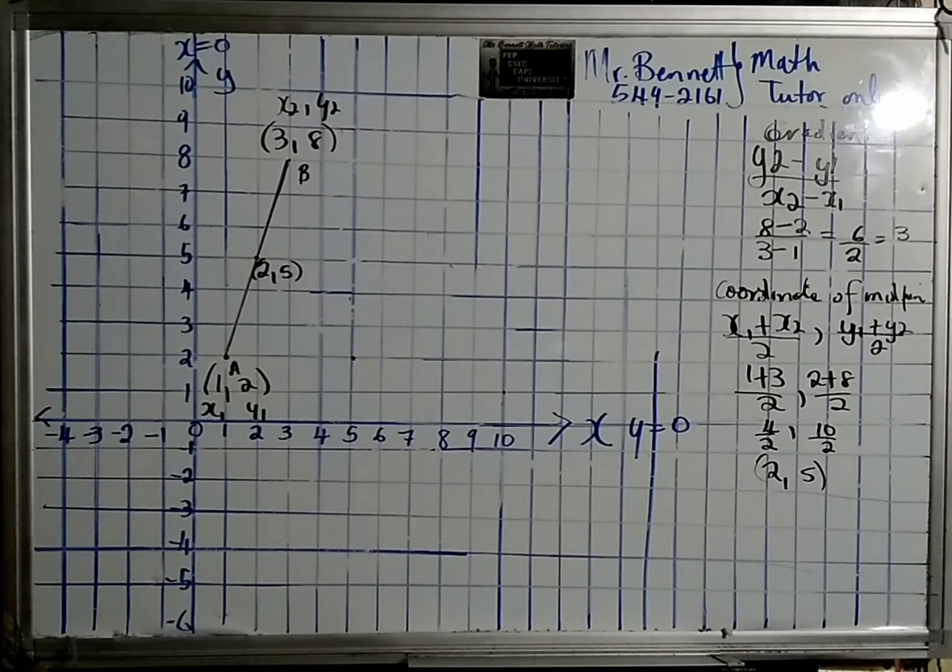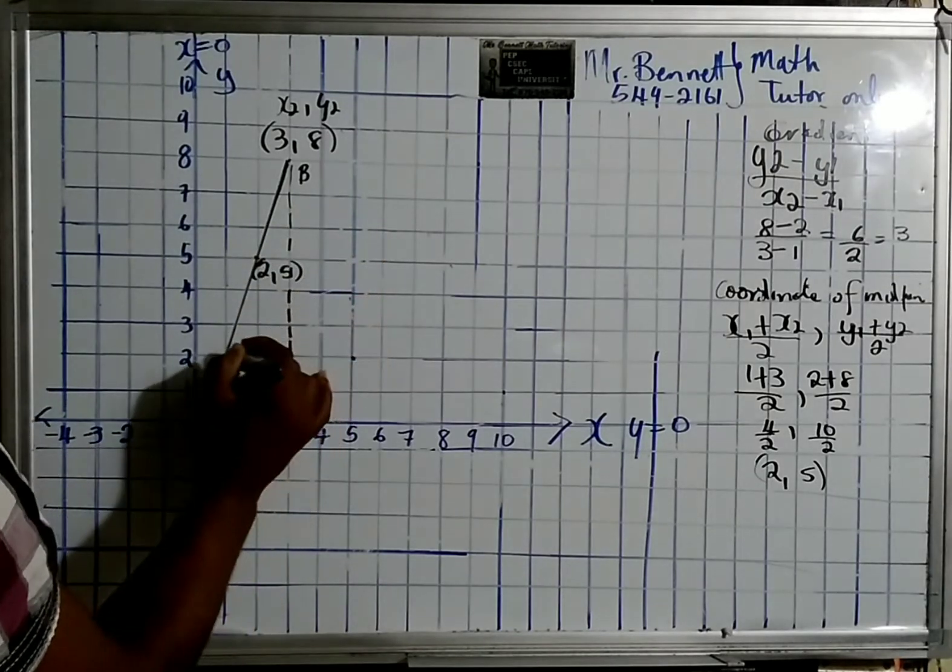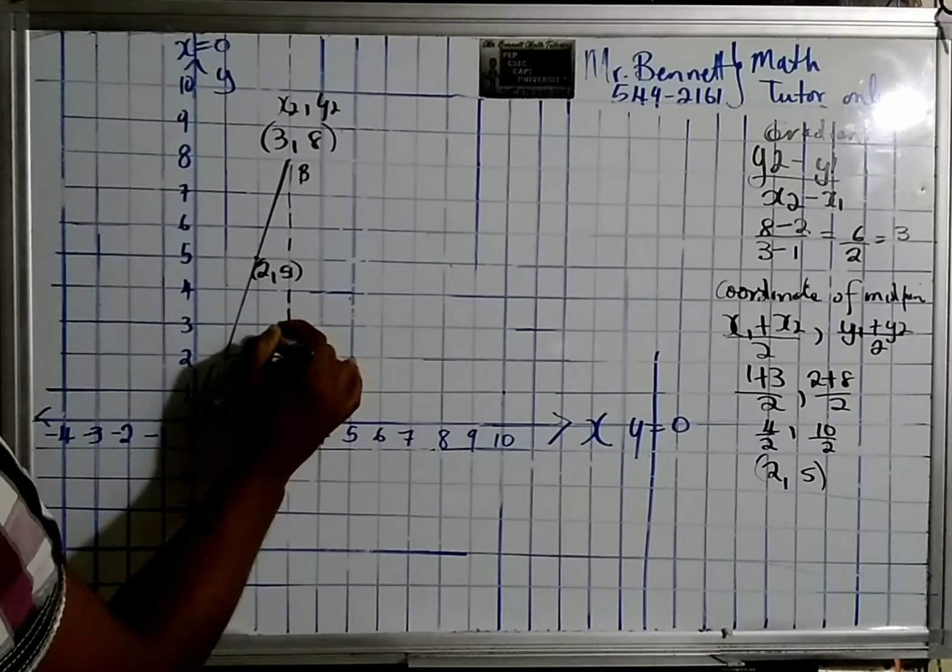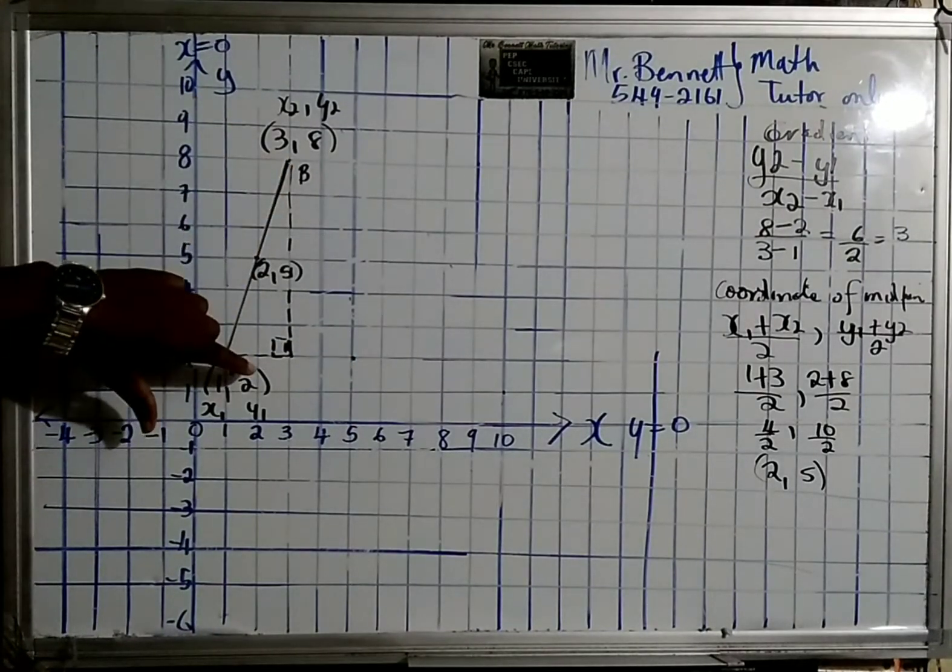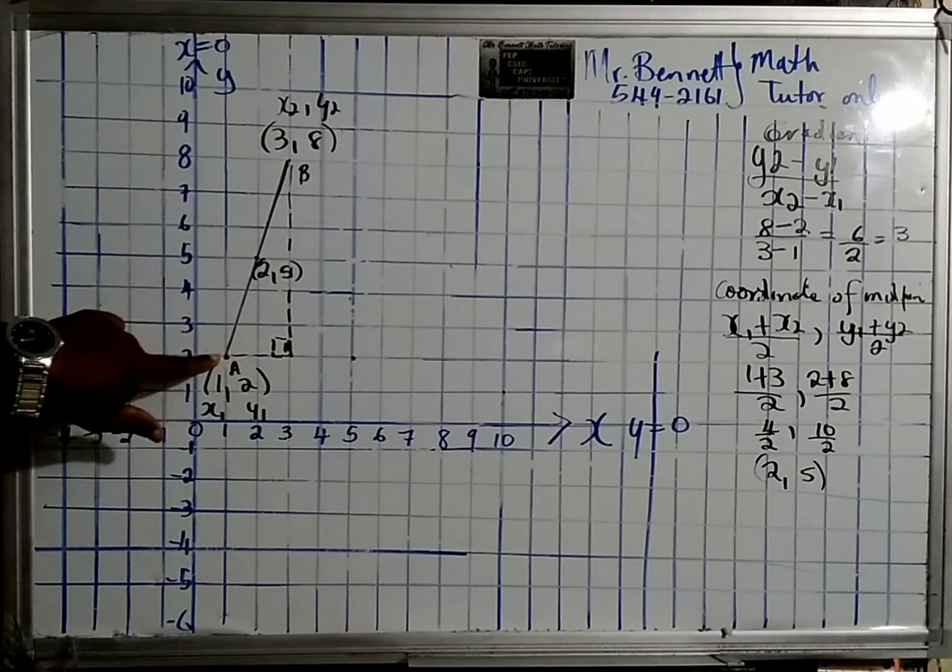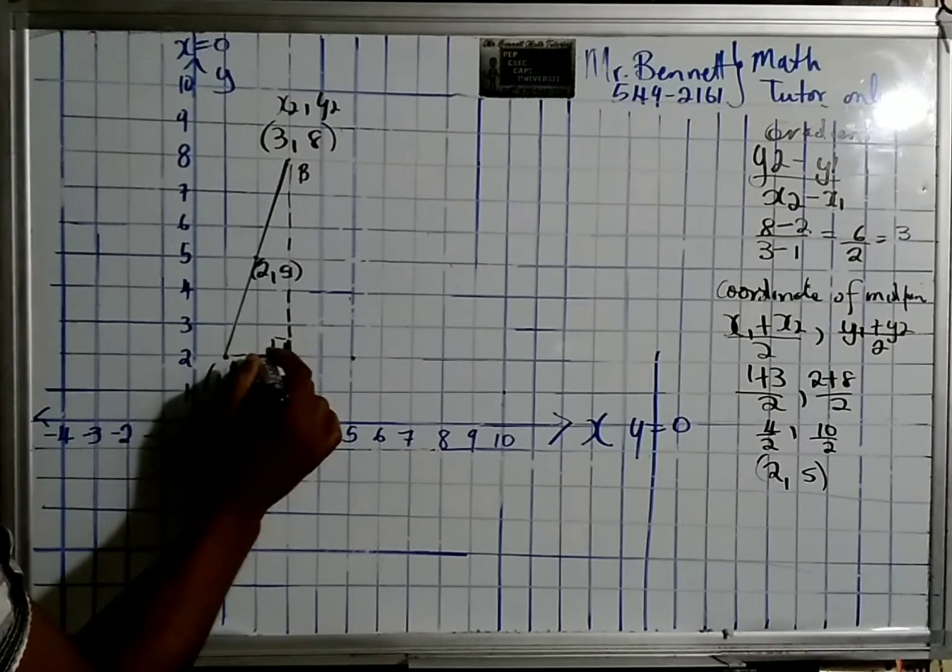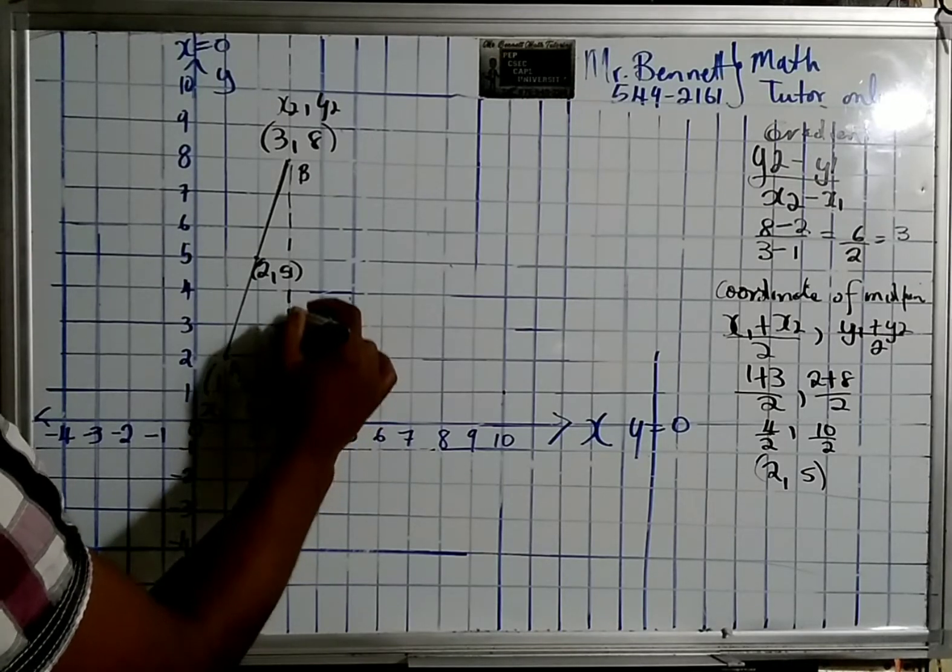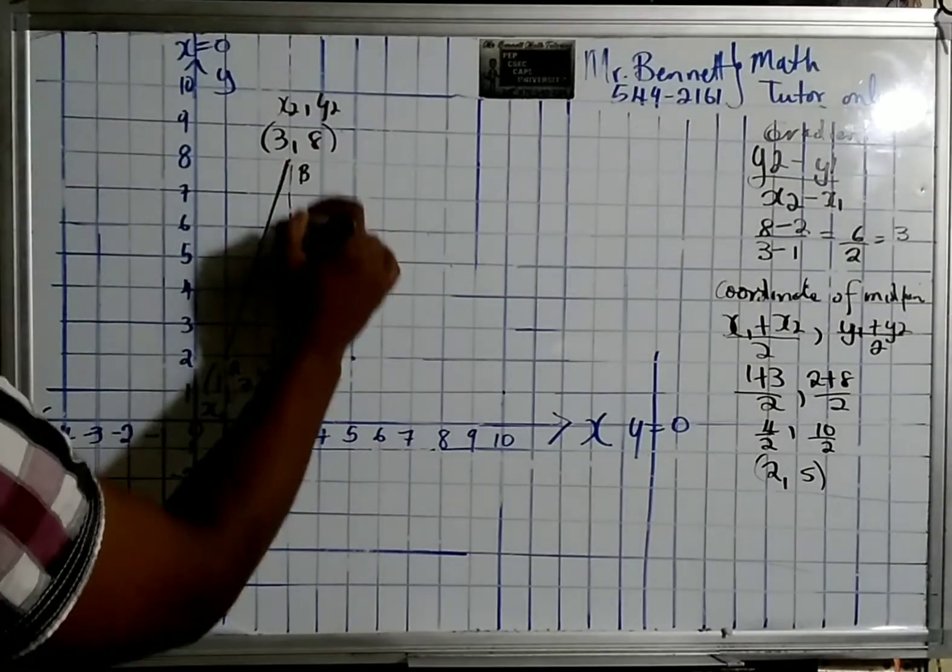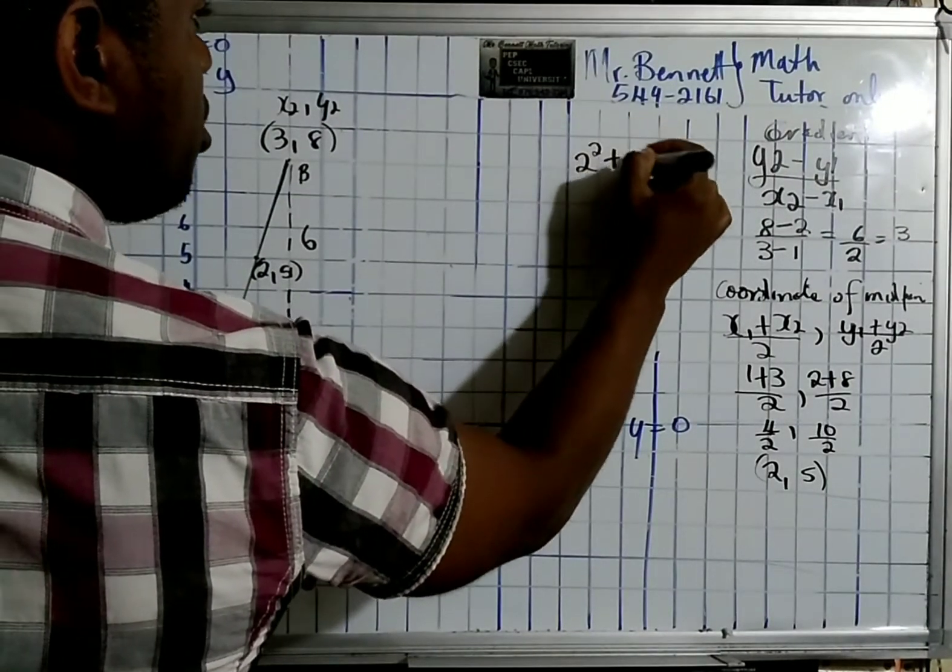All right, let us look at the length of the line. If we look closely, we can see that this forms a right-angle triangle, and the length would be the hypotenuse. So all we have to do is simply check how many units we move across—in the x direction, it's one-two, so it's 2 units. Let's see how many in the y direction: one-two-three-four-five-six.